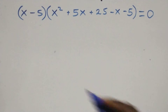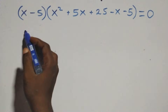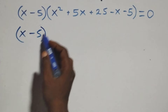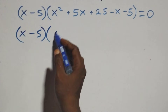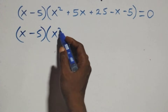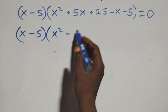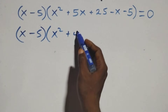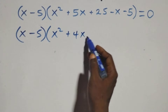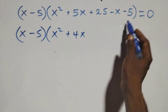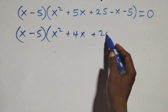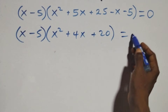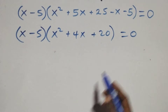Next step, we can write this as (x minus 5)(x squared plus 5x minus x plus 25 plus 5) equals to 0, which simplifies to (x minus 5)(x squared plus 4x plus 20) equals to 0.